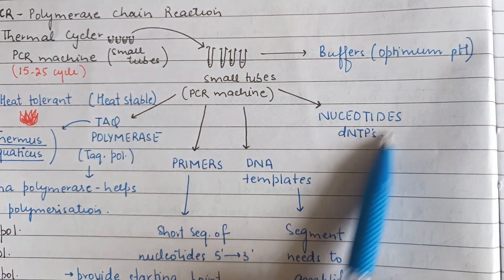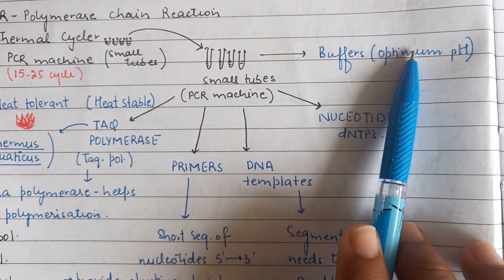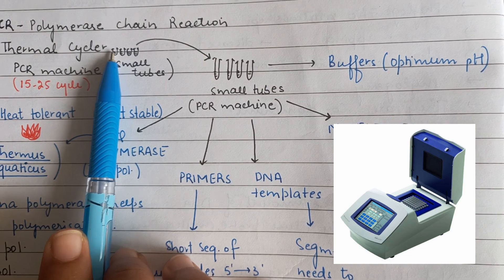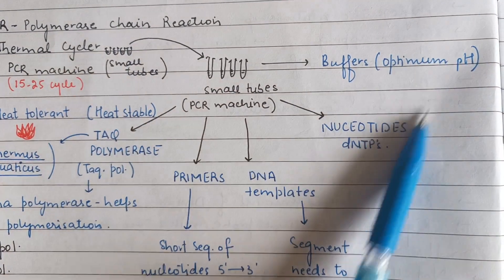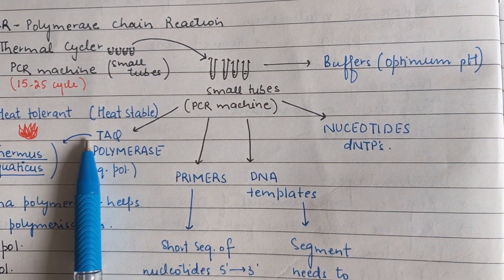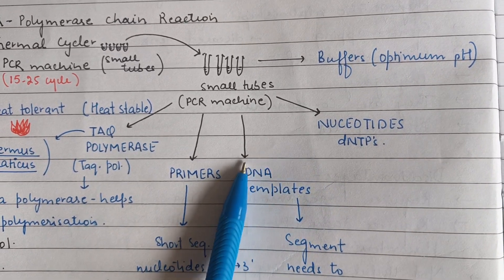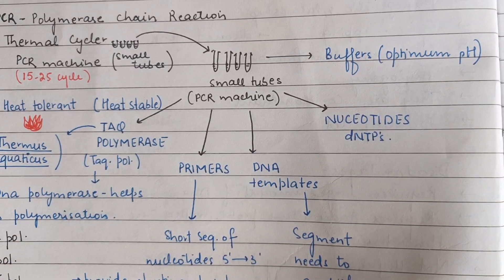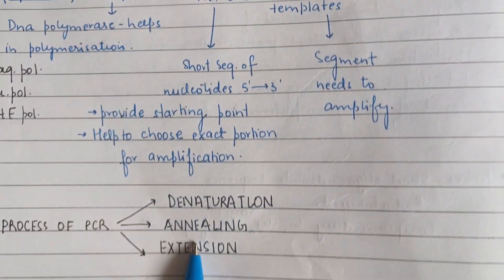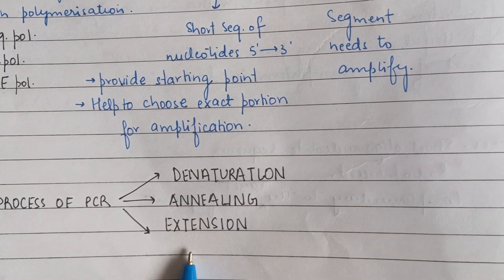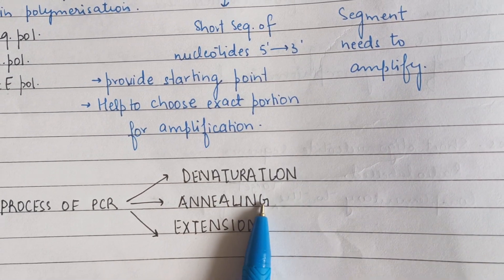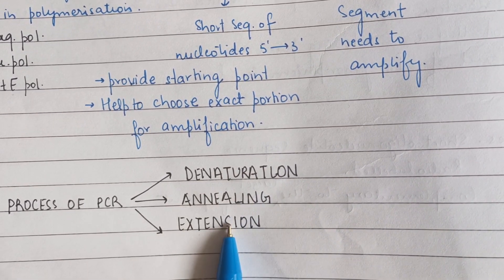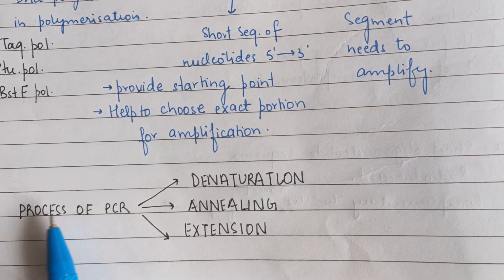All these ingredients — Taq polymerase, primers, DNA template, dNTPs, and buffers — are added in the small tubes of the PCR machine or thermal cycler, and with all this we polymerize the DNA template and create multiple copies of our sample. There are basically three major steps of PCR: denaturation, annealing, and extension.